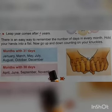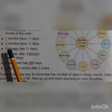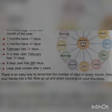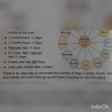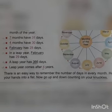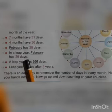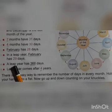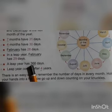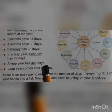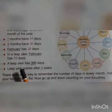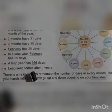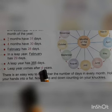That accounts for 11 months — where is the remaining month? That month is February. February has 28 days in an ordinary year. In a leap year, February has 29 days, and in a leap year there are 366 days — one extra day. This leap year comes every 4 years.